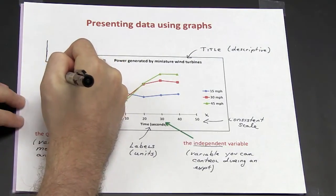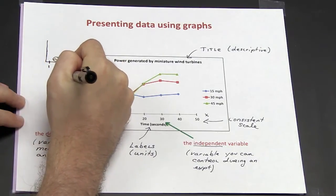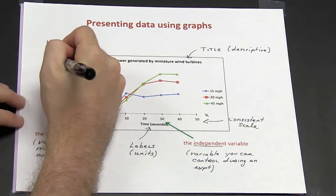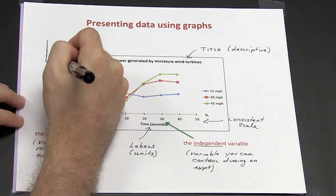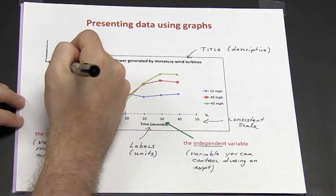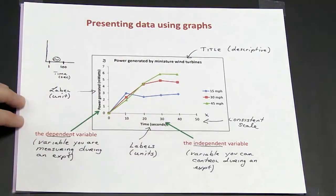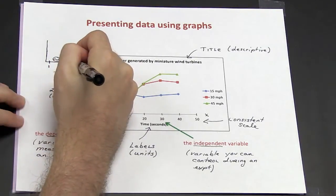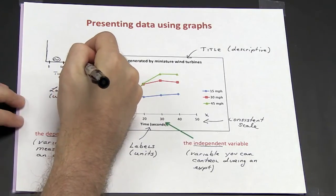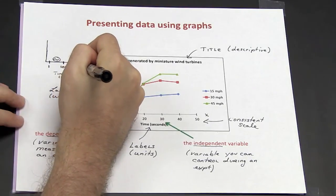if I'm measuring time in seconds and my next data point isn't until 100 seconds, I can add the tilde mark, break my scale, set the new value, and then continue as needed.